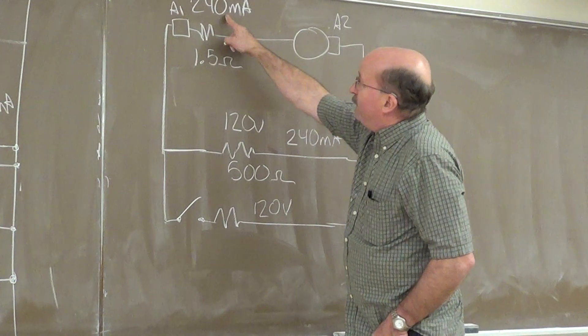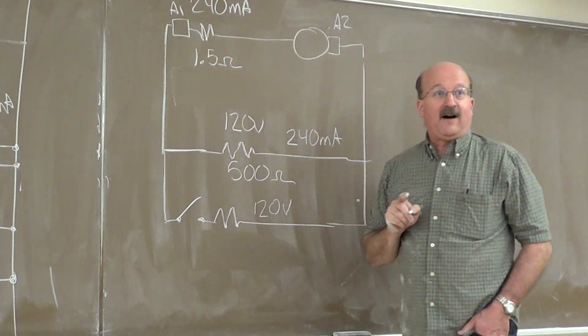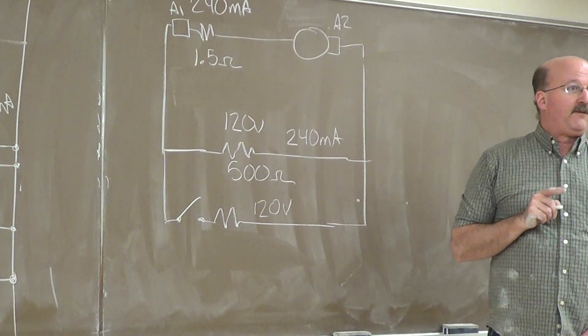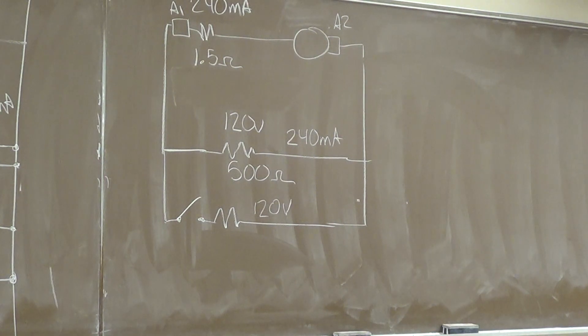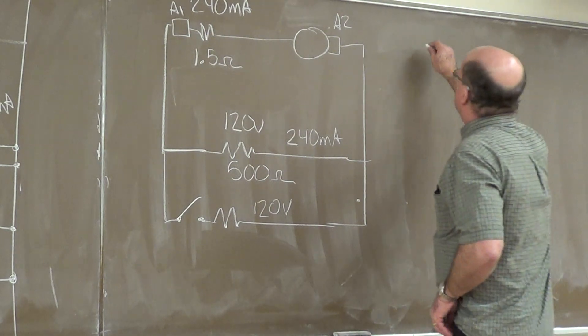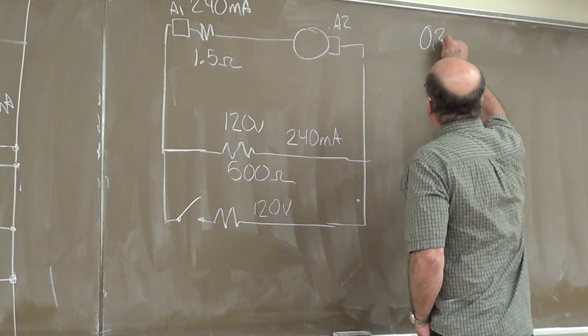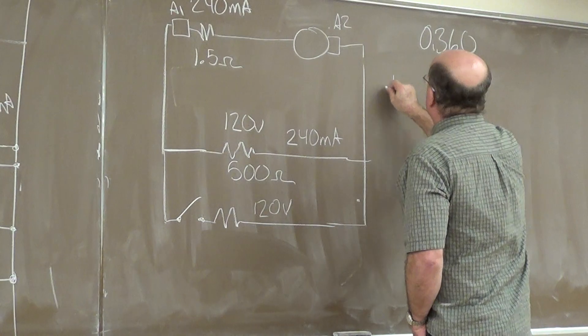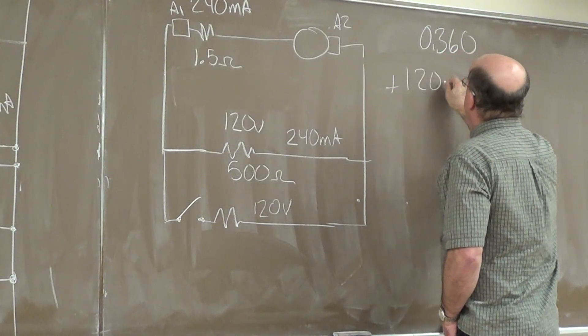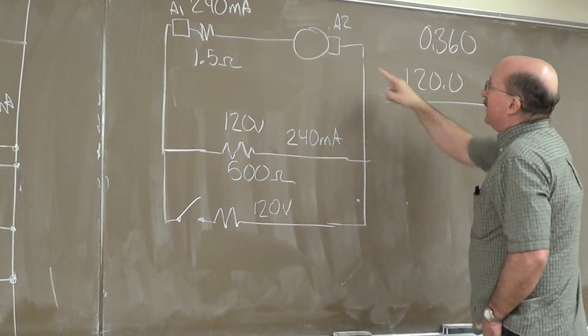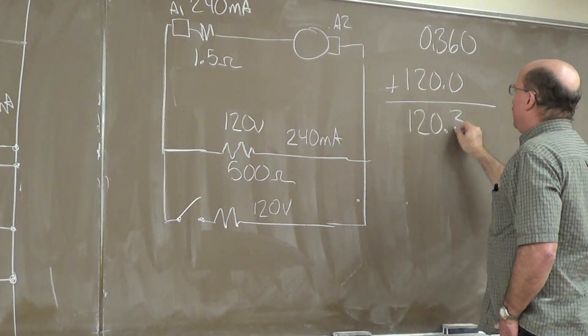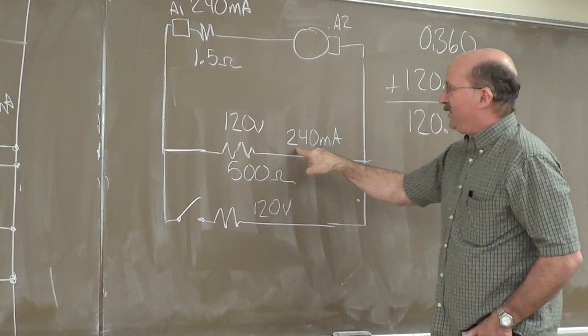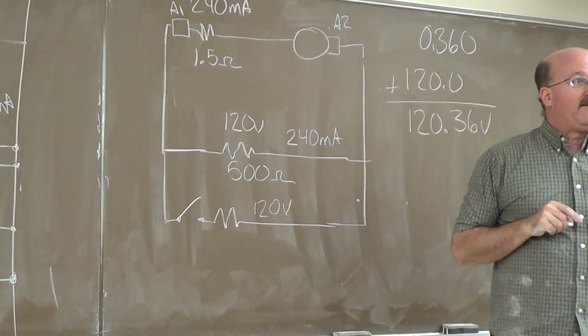We know we have 240 milliamps times 1.5 ohms. What is that voltage? 360 millivolts. 360 millivolts. Plus our 120. That means this generator is generating 120.36 volts in order to get us 120 volts output.